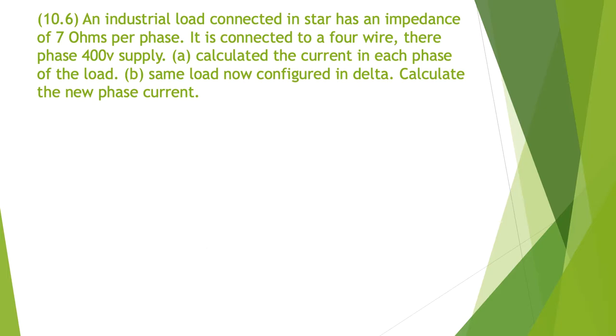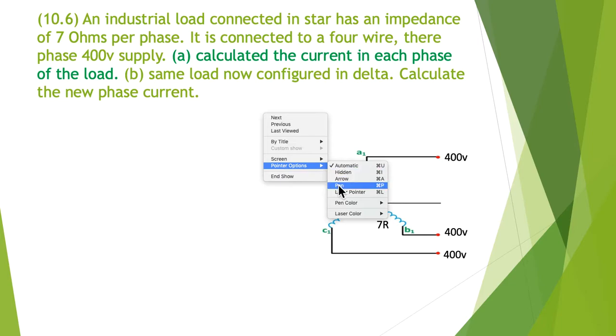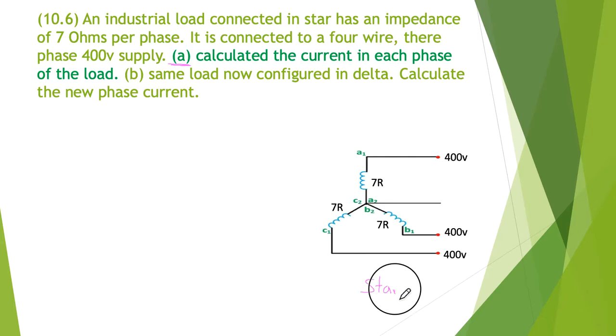10.6. An industrial load connected in star has an impedance of seven ohms per phase. It's connected to a four wire three phase 400 volt supply. Calculate the current in each phase of the load, and b, the same load now configured in delta, calculate the new phase currents. So we've got to work out a star then use it and work out a delta. So let's do our star first. So you can see that I've highlighted in slightly different color so we're doing a here first. So that's our first step. We're going to be looking at a and it is a star circuit. They've given us to start with. So here it is in star. Got 400 volts, it's four wire, there's our neutral and 400 volts. And it told us that we have seven ohms impedance in each of the branches. So there's our data on our diagram.